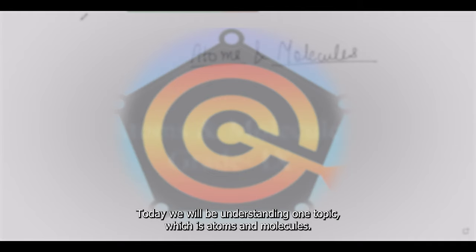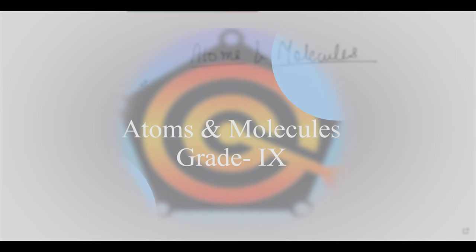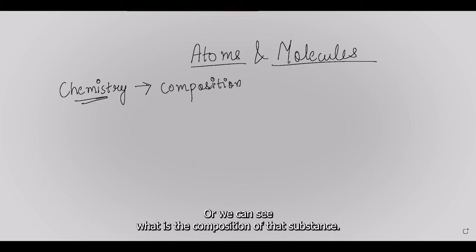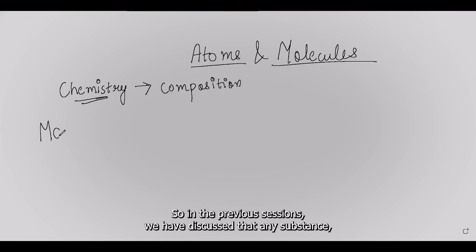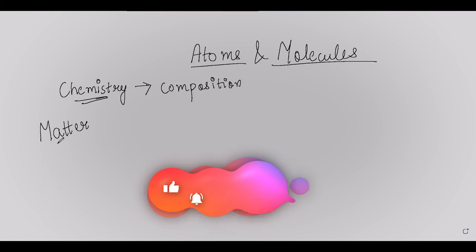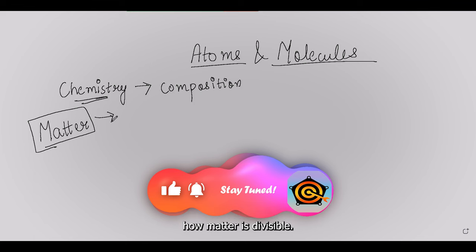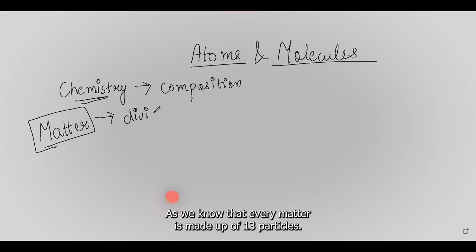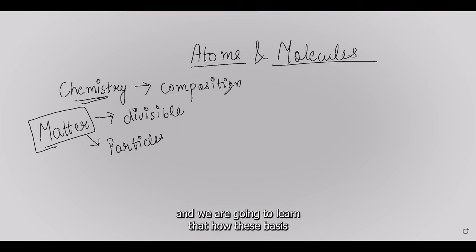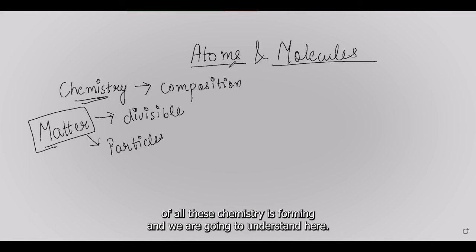Hello everyone. Today we will be understanding atoms and molecules. In chemistry we will be understanding how a particular substance is formed, or what is the composition of that substance. In the previous sessions we discussed that any substance with mass or occupying certain space is called matter. Today we will discuss how matter is divisible, as every matter is made up of certain particles.